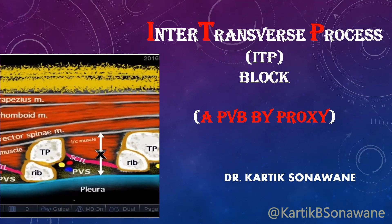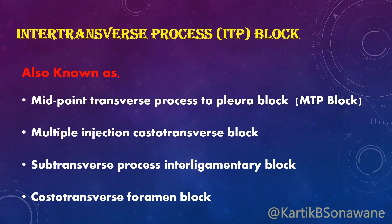ITP block — Inter-Transverse Process block — is a paravertebral block by proxy, or indirect paravertebral block. It is known by various names such as MTP block (Mid-Transverse Process to Pleura block), multiple injection costo-transverse block, sub-transverse process interligamentary block, or costo-transverse foramen block.